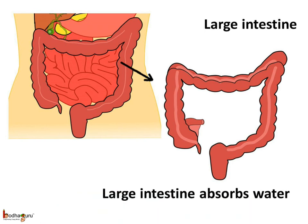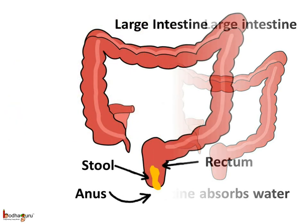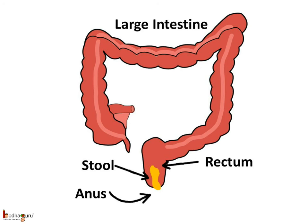After the absorption of digested food, the undigested food moves into the large intestine. The large intestine absorbs the water from it, as water is precious. After the absorption of water, the undigested food becomes semi-solid and gets stored in a sac-like part at the end of the large intestine called the rectum. This undigested semi-solid food is called feces or stool, and the fecal matter is removed through the anus from time to time.